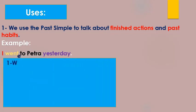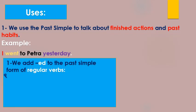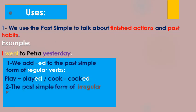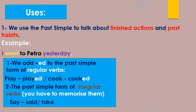Here we have: we add -ed to the past simple form of regular verbs. For example: play-played, cook-cooked. And the past simple form of irregular verbs, which don't have a rule, so you have to memorize them. For example: say, sit, take, talk.